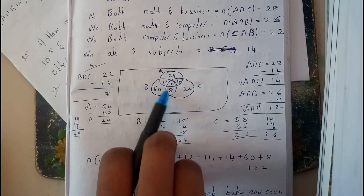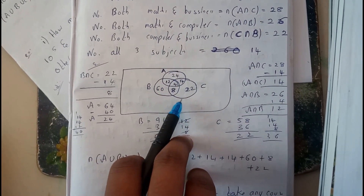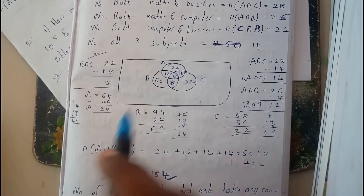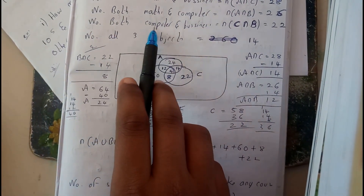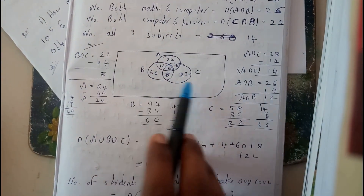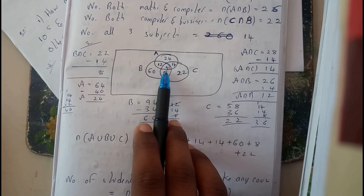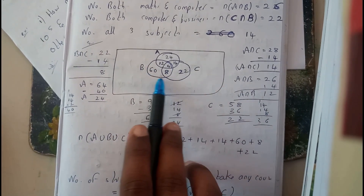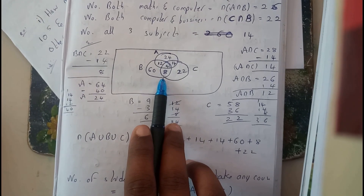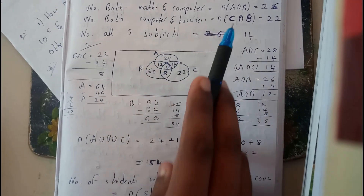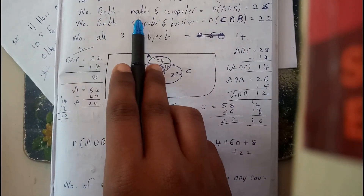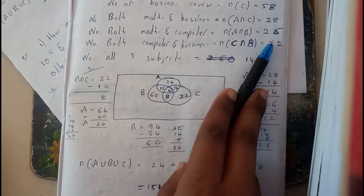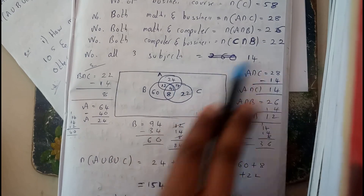Now fill the three two-set intersections. Students interested in Computers and Business are 22, but 14 is already in the center, so 22 minus 14 equals 8 — write 8 there. Students in Maths and Computers are 26; 14 is already filled, so 26 minus 14 equals 12 — write 12 there.